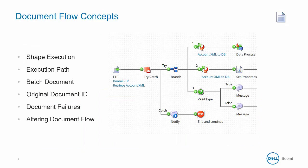Now let's talk about some more advanced aspects of document flow. In the following slides we'll define these concepts: shape execution, the execution path, a batch document, the original document ID, document failures, and altering document flow.